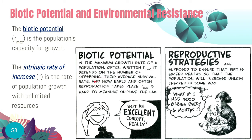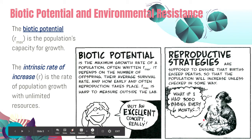Biotic potential depends on the number of offspring, their average survival rate, and how early and how often reproduction takes place. Note that biotic potential is hard to measure outside the lab, since it's hard to set the parameters in an actual environmental setup. Scientists try to simulate it in the laboratory or observe organisms in the wild, including all limitations of their study. Connected to biotic potential are the different reproductive strategies that organisms have to increase the probability of their offspring surviving to adulthood.